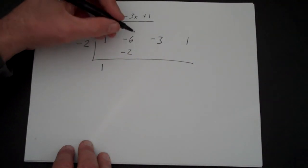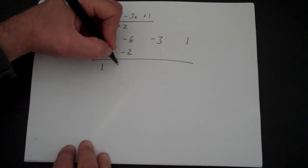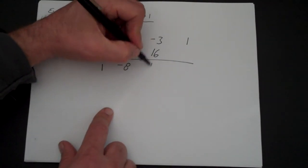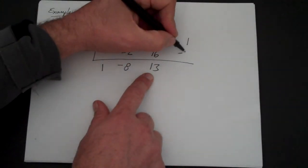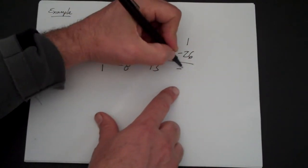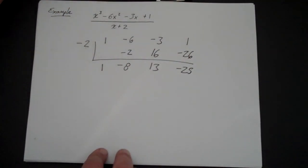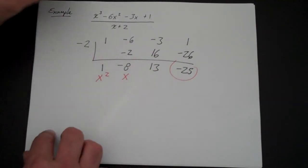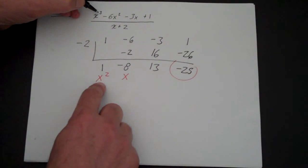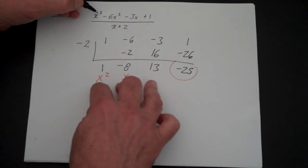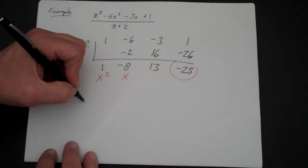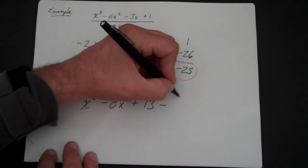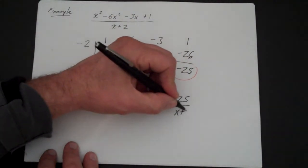Negative 2 times 1 is negative 2. Minus 6 plus minus 2 is minus 8. Negative 2 times minus 8 is positive 16. Minus 3 plus 16 is 13. Negative 2 times 13 is minus 26. Add: 1 plus minus 26 is minus 25. You're done. This is your remainder. This is x and this is x squared, and that's the constant. Your answer is x squared minus 8x plus 13, minus 25 over x plus 2. You're done.